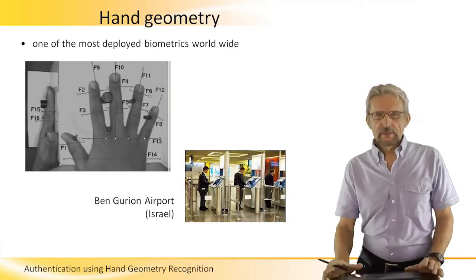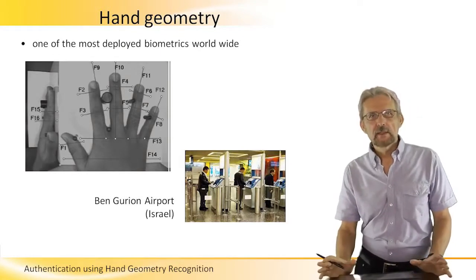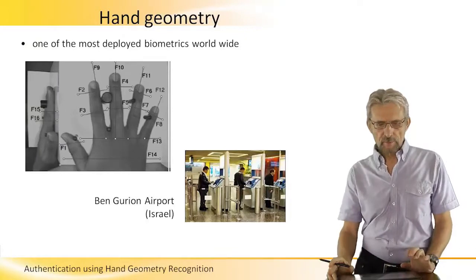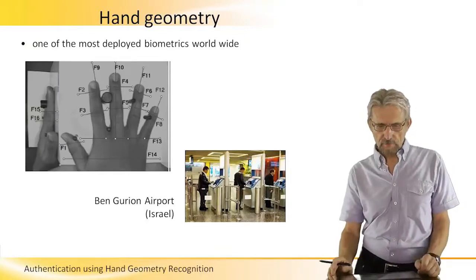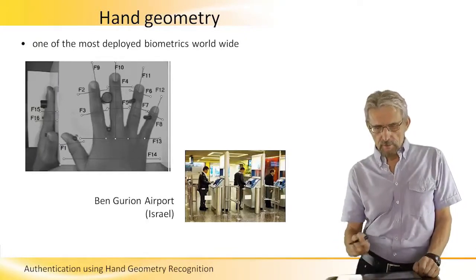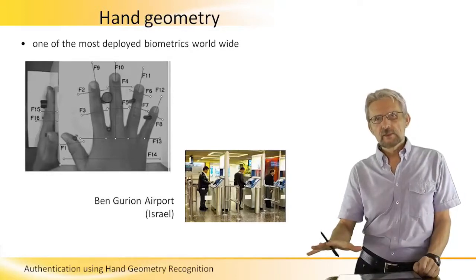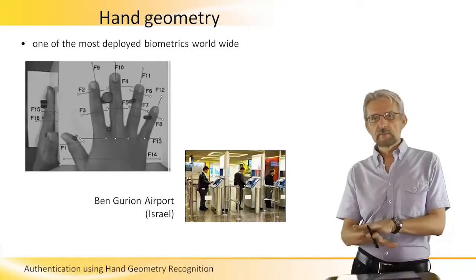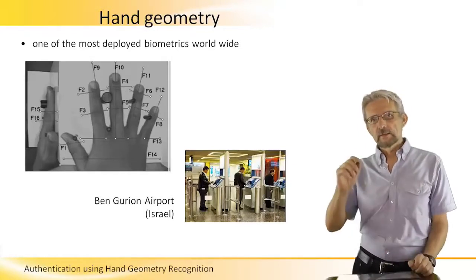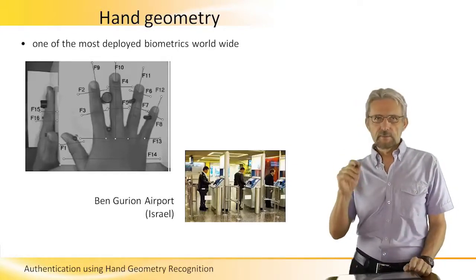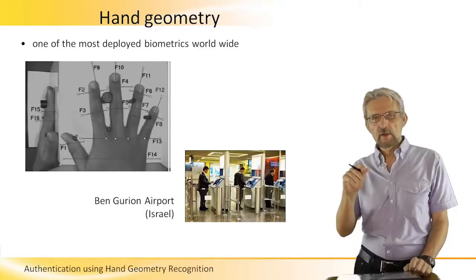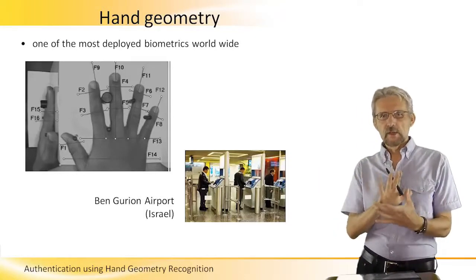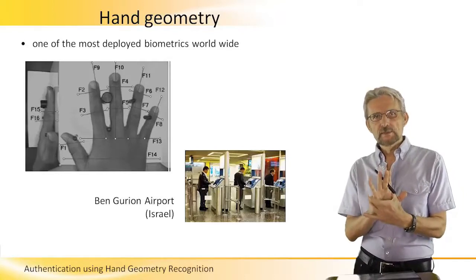Here's something intermediate in terms of complexity called hand geometry. As you see in this picture, you place your hand on a special device and it measures — it builds a kind of map of the relationship: how long the fingers are relative to each other, the width of the palm, and so on.